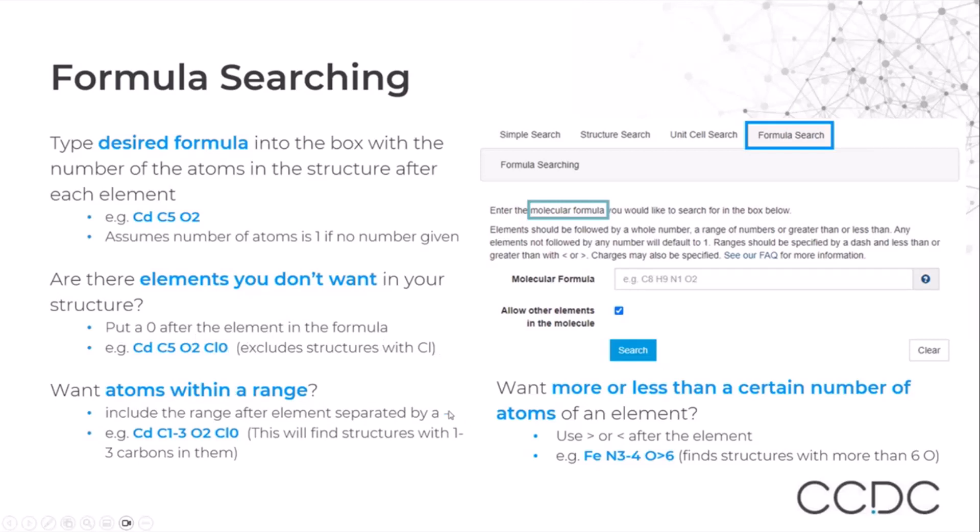If you want an atom within a range, you can do it by having your element with the number separated by a dash. In this case, we wrote C1-3, so it will find structures with 1 to 3 carbons in them. You can also specify whether you want more or less than a certain number of atoms using the greater than or less than symbols.